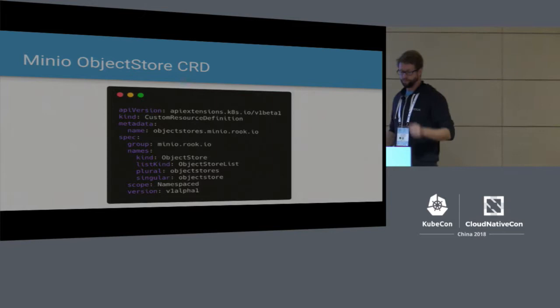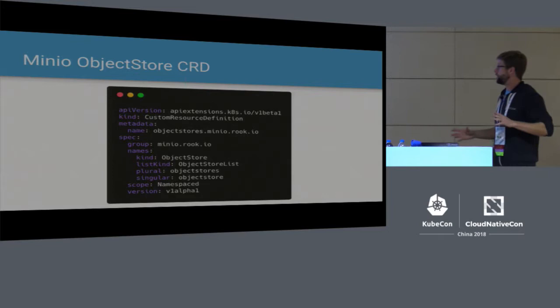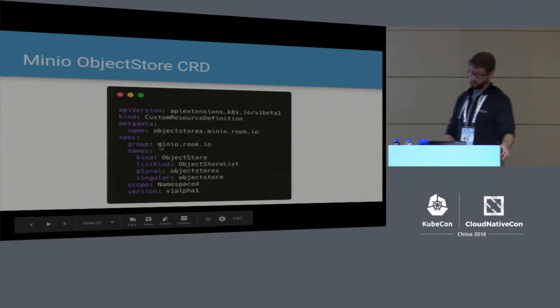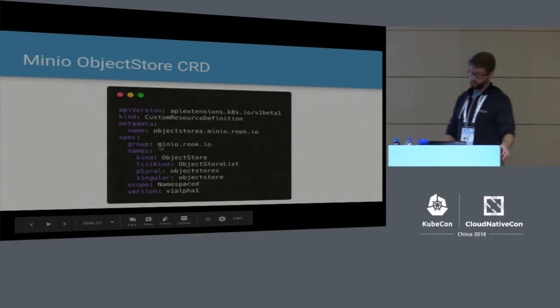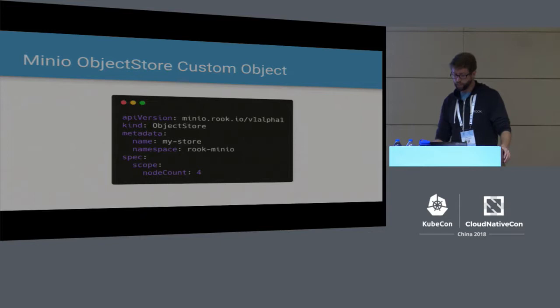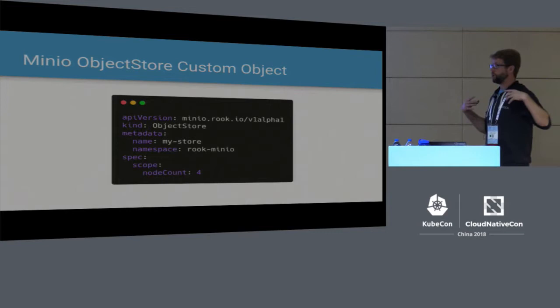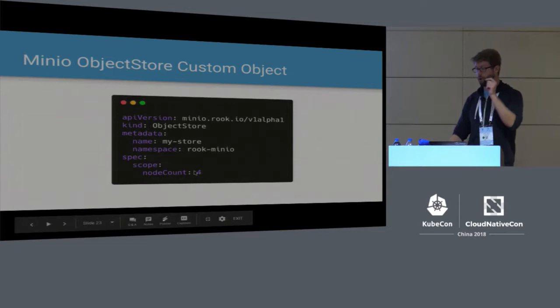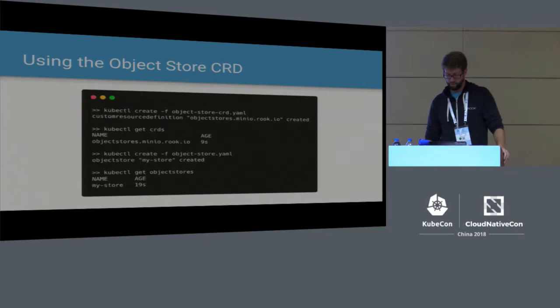Let's look at what it looks like to have Minio running in the cluster. This is a custom resource definition — a CRD — that teaches the Kubernetes API about what Minio is. Kubernetes has no idea what Minio is until we tell it. This says: for the Minio group, there's going to be something called an object store, with extra metadata so that when you say 'object store' on the command line, Kubernetes knows what you're talking about. Once you've created the type — the custom resource — you can create an instance of it and say: give me an object store across four nodes.